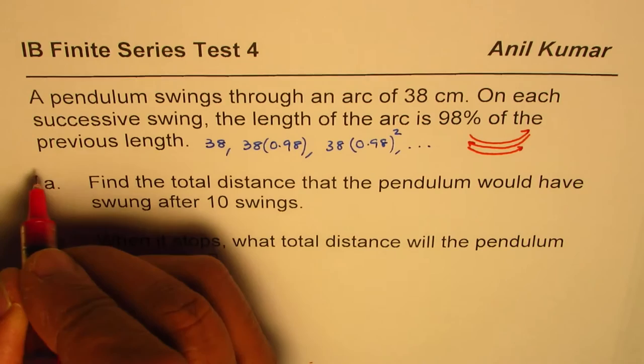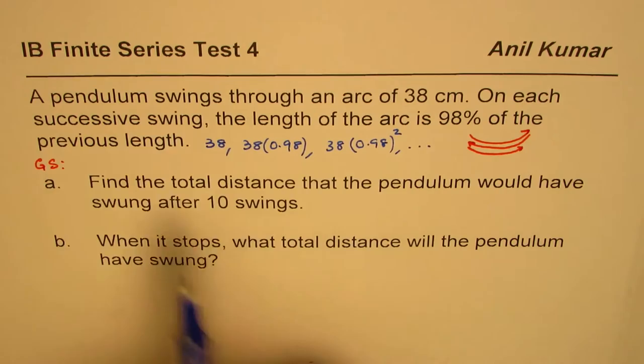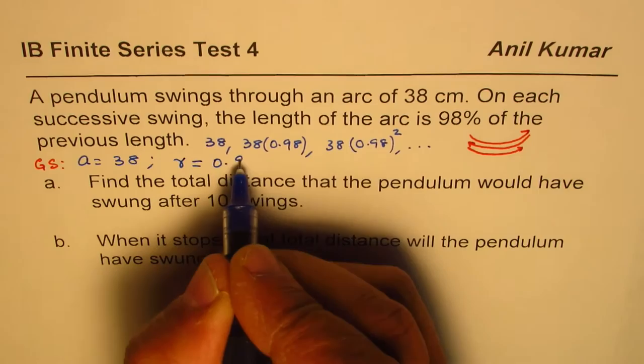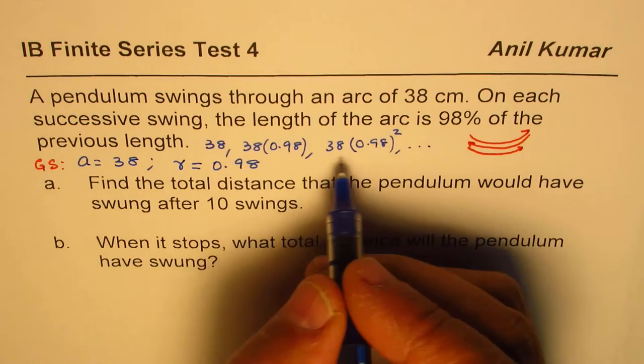So we have a geometric series where the first term a is equal to 38, and the factor by which it is multiplied, r, equals 0.98. This gives you the formula for the nth term and also sum of terms.